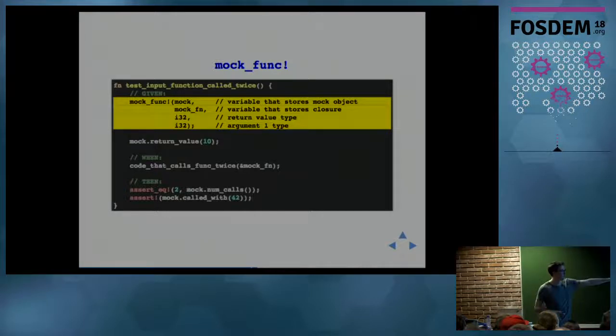Then you can specify, just like you would with the traits, behavior - it will return 10 - and also specify how it was used. Say we had some function that we expected to call the function we pass in twice, then we say that it was called two times.